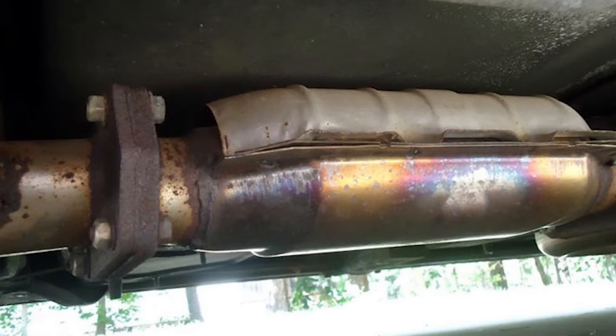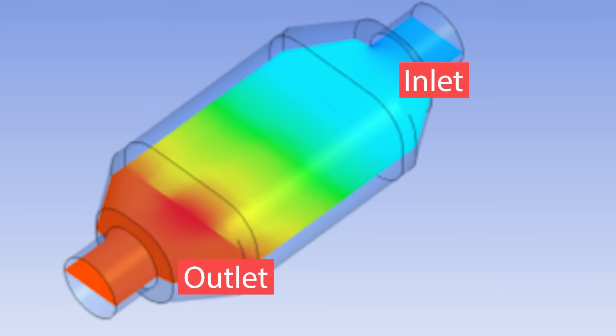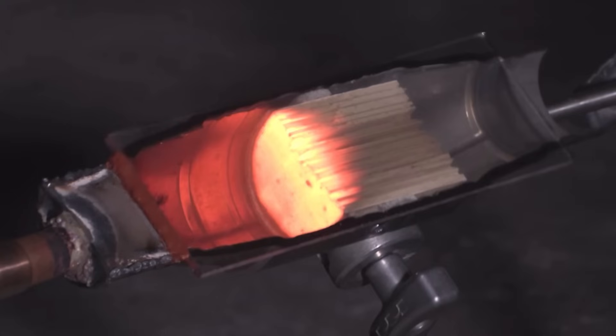A bronze-blue rainbow discoloration of the shell typically indicates elevated temperatures and overheating of the converter. Typically, converter temperatures will not exceed 1,200 degrees Fahrenheit on a properly running engine. But periodic operation above 1,600 degrees Fahrenheit can reduce the converter's efficiency by damaging the precious metal coating on the substrate.